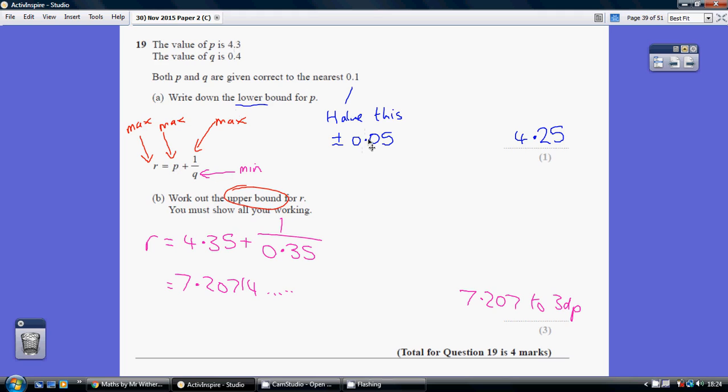upper bound, so we're now adding on 0.05, so 4.35, plus 1 over smallest value of Q. So taking 0.05 off Q, 0.35, pop that into your calculator, you get this as an answer.